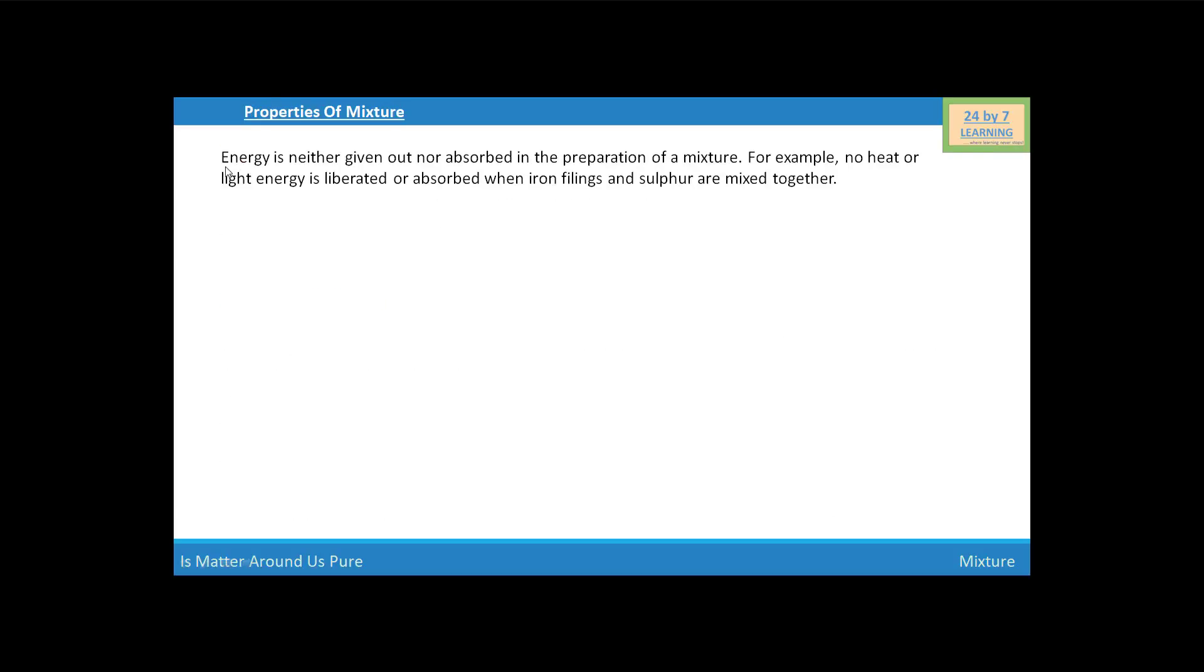Next property of mixture is, energy is neither given out nor absorbed in the preparation of a mixture. For example, no heat or light energy is liberated or absorbed when iron filings and sulfur are mixed together. A mixture does not have a sharp melting or boiling point. For example, sugar solution does not boil at a fixed temperature. Mixture may be homogeneous or heterogeneous type.